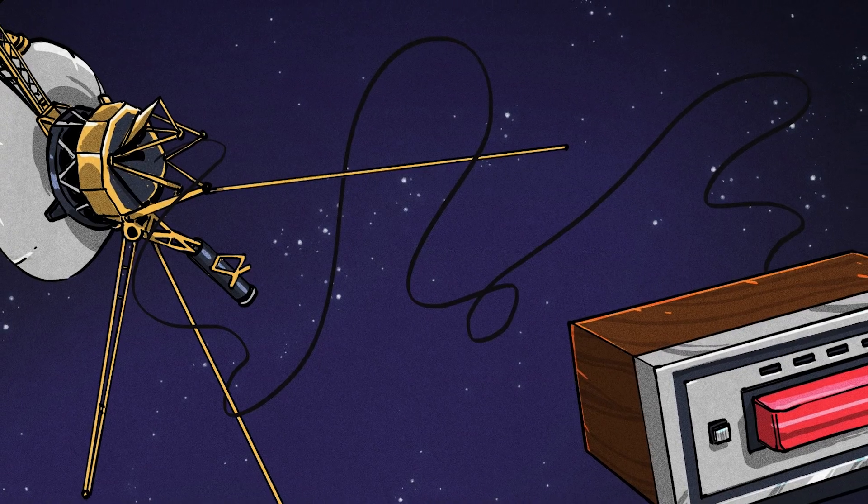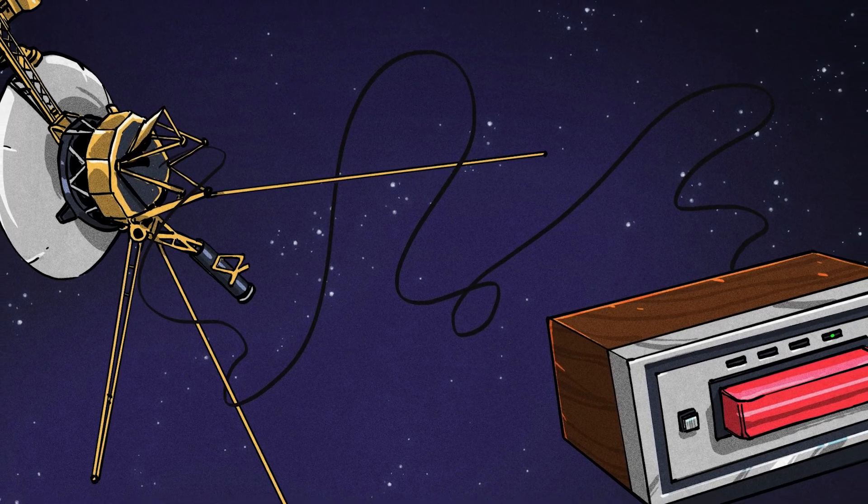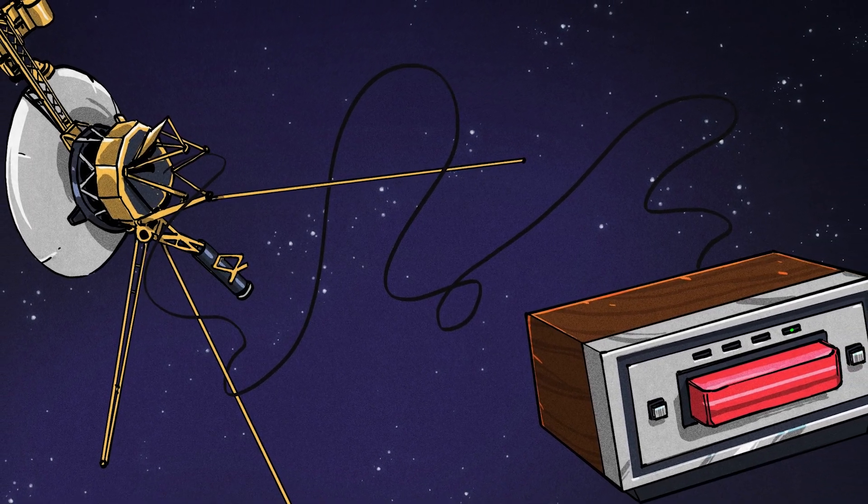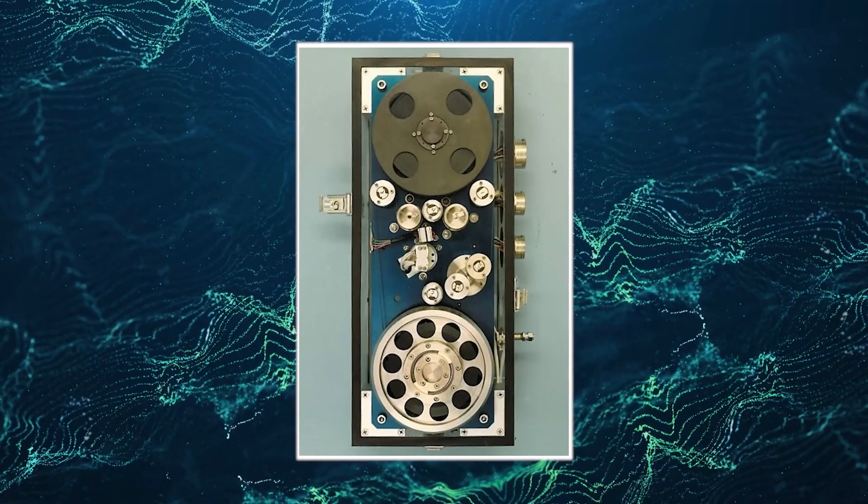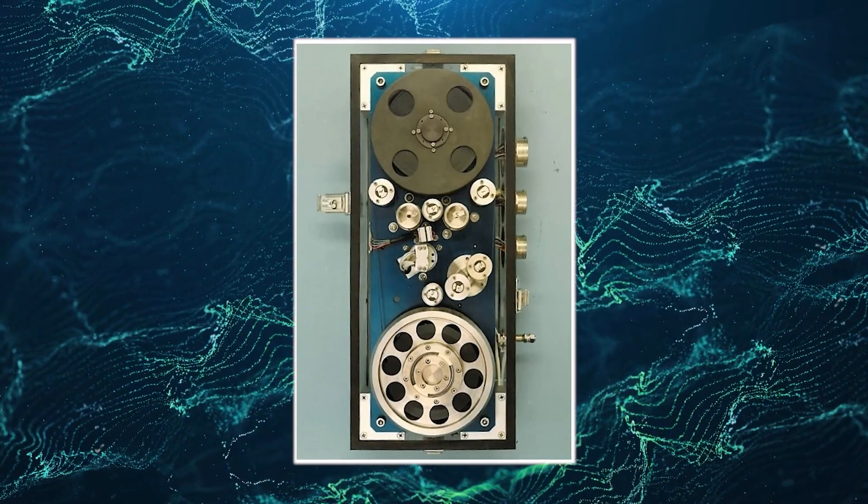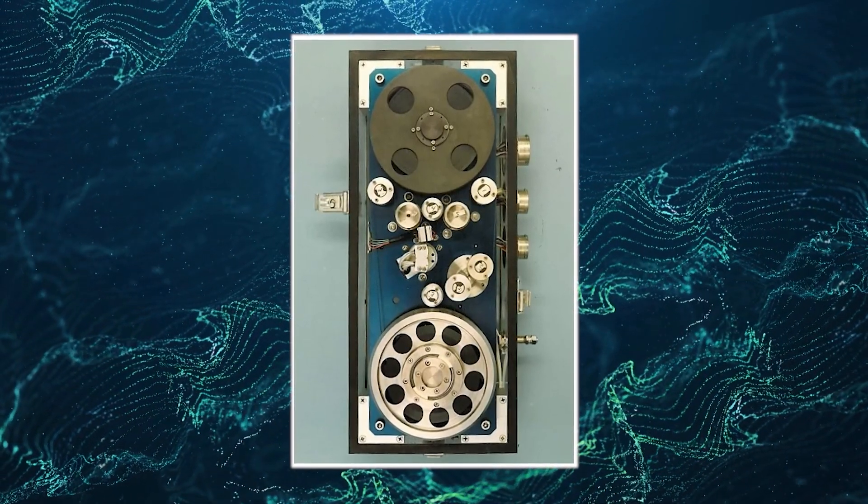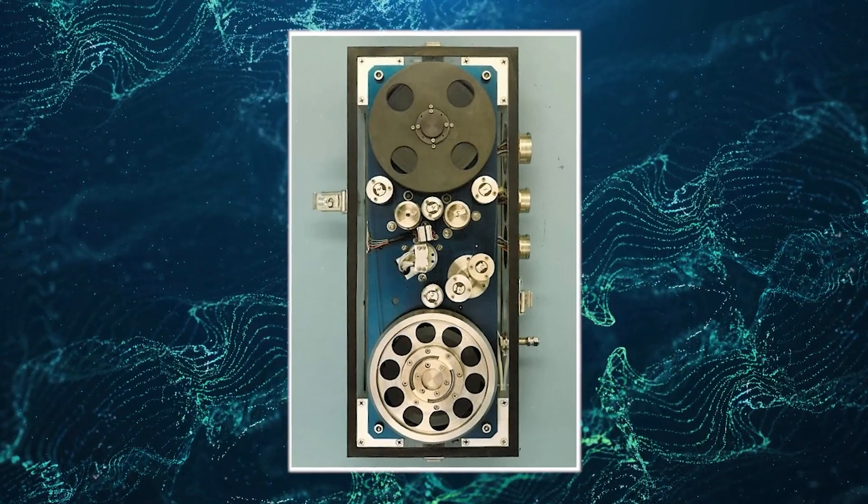The data collected by the onboard instruments was stored on eight-track tape recorders before being transmitted back to Earth using a modest 23-watt transmitter, about as powerful as a refrigerator's light bulb, paired with wide antennas.